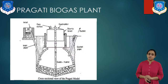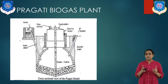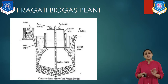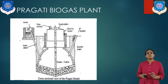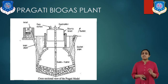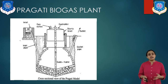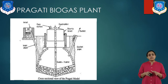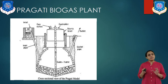Let us explain the Pragati biogas plant. Again, you have to see this design and draw it if asked. This design has been developed by a United Nations socio-economic development and research program based in Pune. The depth of the pit is reduced so that it can be easily reconstructed. The design is 20% cheaper than the KVIC system. A wall in the digester at the center separates incoming slurry and outgoing slurry. A floating drum is provided to collect the gas, and a guide made of steel pipe and iron angle allows the gas holder to move up and down.